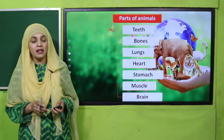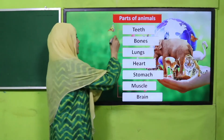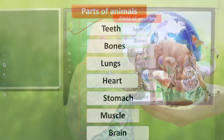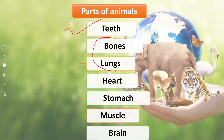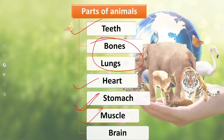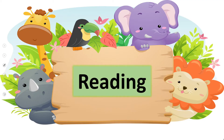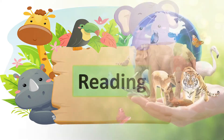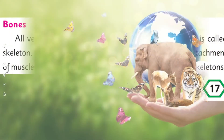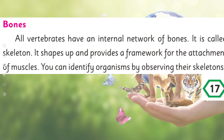The parts of animals — we have already discussed about teeth. Today we are going to discuss about bones and lungs. Other parts of the animals include the heart, stomach, muscles, and brain. Now is the time for reading — please open page number 17 in your Science 4 books.